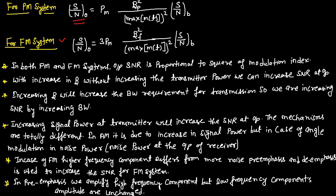In both PM and FM systems, the output SNR is proportional to the square of the modulation index. By increasing beta without increasing transmitter power, we can increase SNR at the output. However, increasing beta will increase the bandwidth requirement for transmission. So, we are increasing SNR by trading off bandwidth.